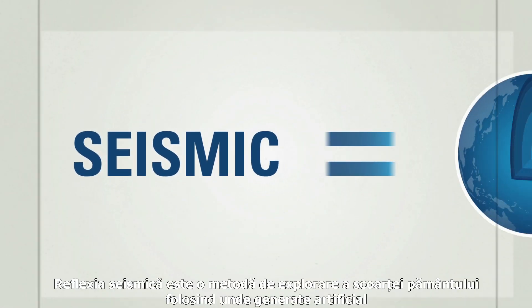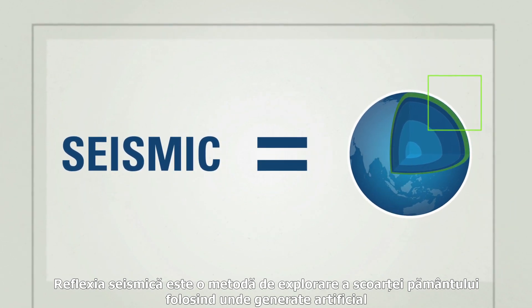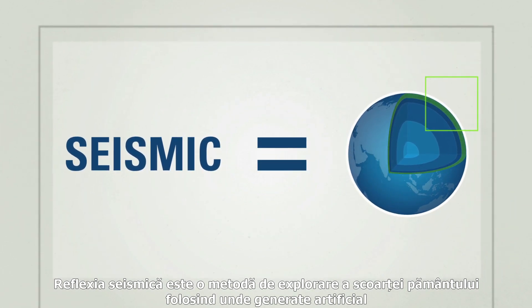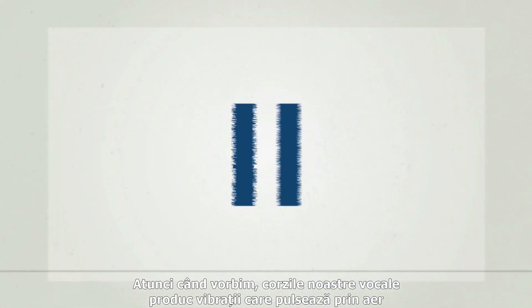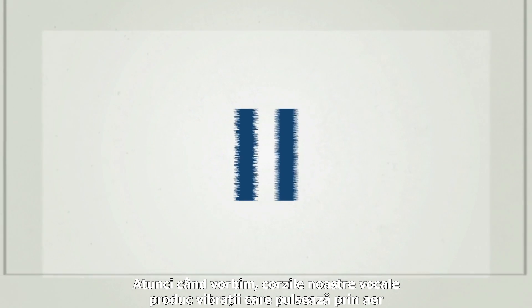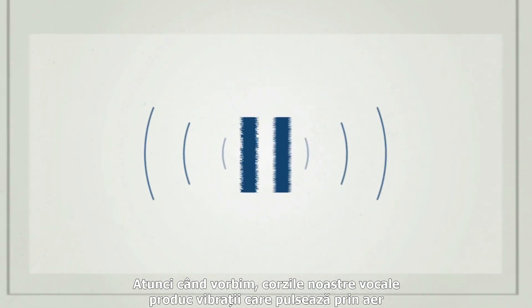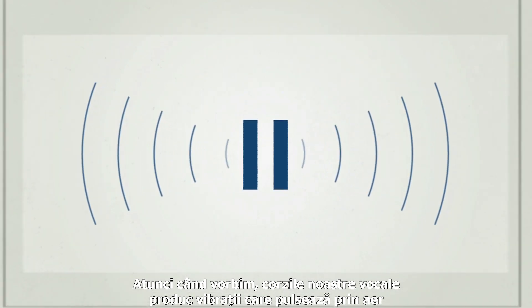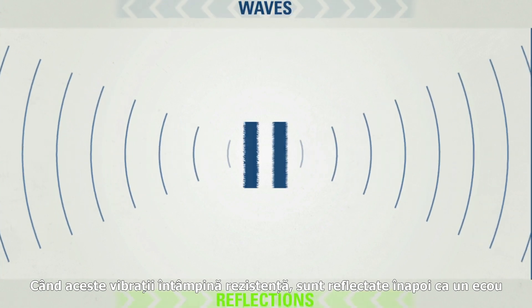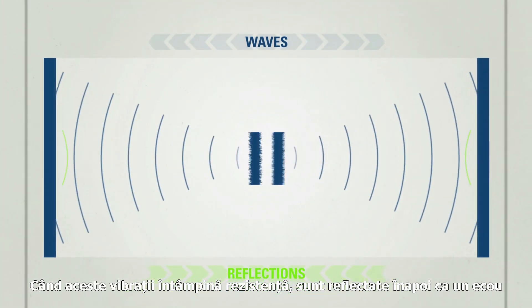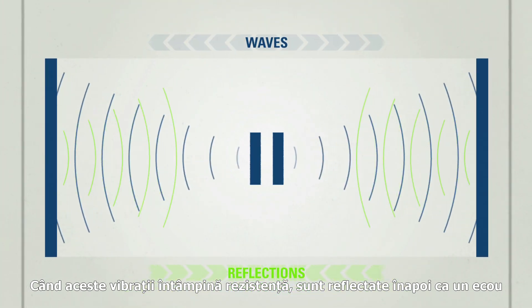Seismic reflection is a method of exploring the Earth's crust using artificially generated waves. When we speak, our vocal cords produce vibrations that ripple through the air. When these vibrations meet resistance, they are reflected back as an echo.